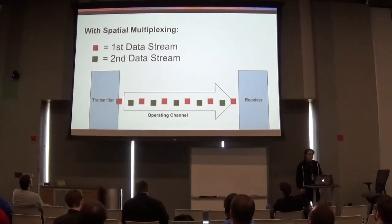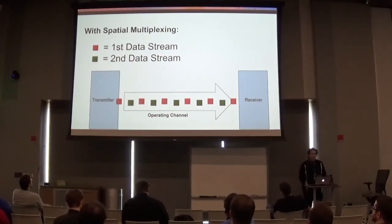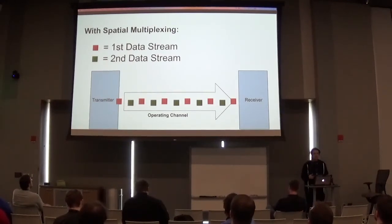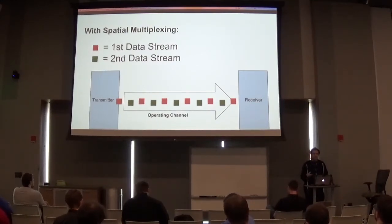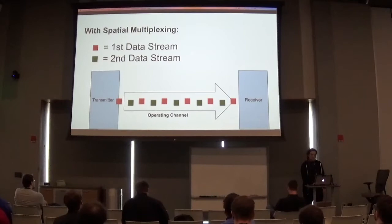How does it do this? Going back to MIMO — you break up the different data streams into different spatial streams, each of which is handled by a different antenna. That's kind of how you do that.